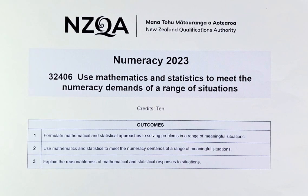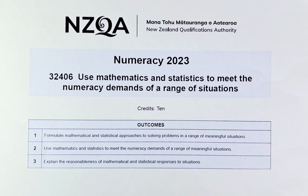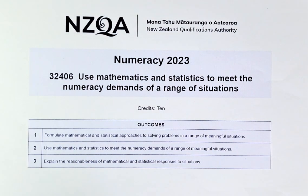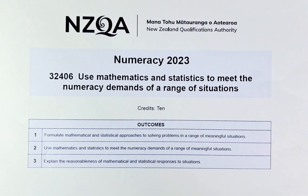It means that there's no Achieved, Merit, or Excellence. It's only either you get Achieved or Not Achieved. If you get an Achieved, you'll get 10 credits. If you don't, you will get 0 credits and you have another chance to do it in the future. To get 10 credits is very simple. There are 3 outcomes in this paper — Outcome 1, 2, and 3. Different questions have different outcomes, so a combination of all the outcomes, if you meet the requirement, then you will get the 10 credits. Without further ado, let's do question 2F and 2G of this paper.